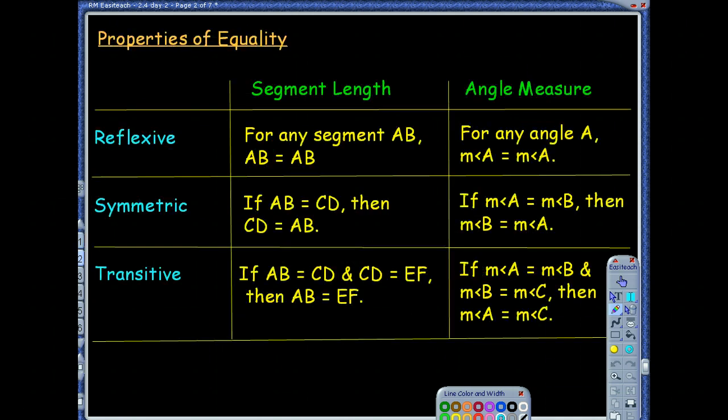We talked about some properties of equality in terms of the addition property of equality, the subtraction property of equality. These are just continuing on those properties of equality. We have the reflexive property of equality, which says for any segment AB, that AB will equal AB. Their measures are equal. Well, it's the exact same segment, so that would make sense that its measure is equal to itself.